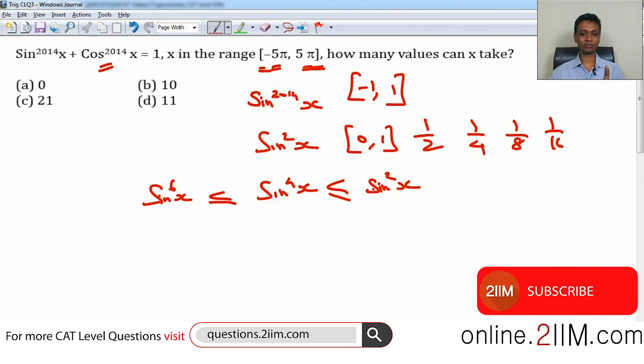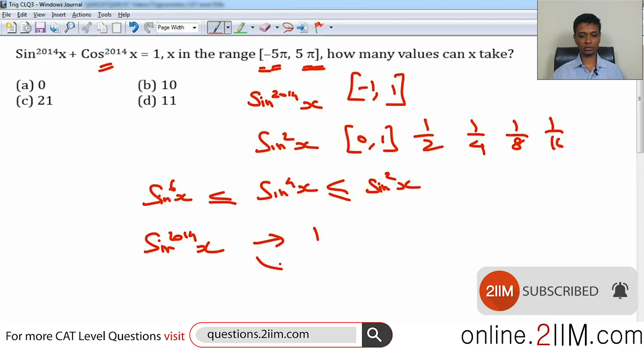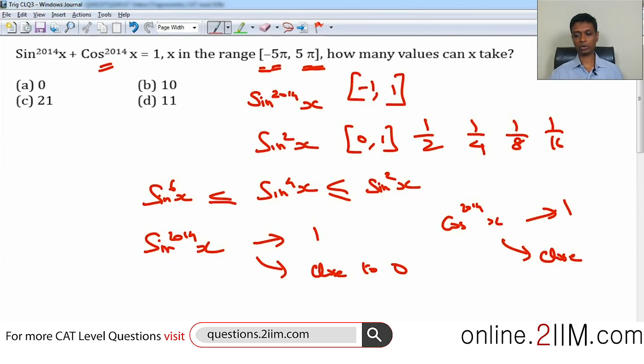When sin(x) is 1, when sin²(x) is 1. When sin²(x) is 1, sin⁴(x) will also be 1, sin⁶(x) will also be 1, sin⁸(x) will also be 1, then it will not shrink. Now, the moment you pick that, that sin^2014(x), if you look at it, it will either be 1 or it will be close to 0. You take cos^2014(x), it will either be 1 or it will be close to 0. The moment we pick this, we are done with this question, practically.